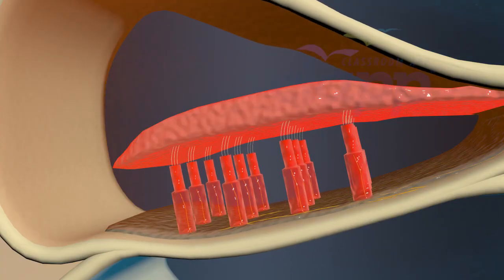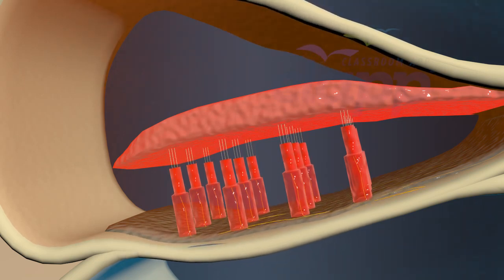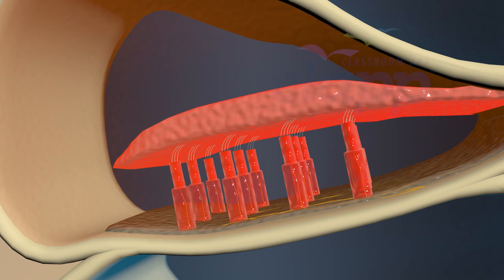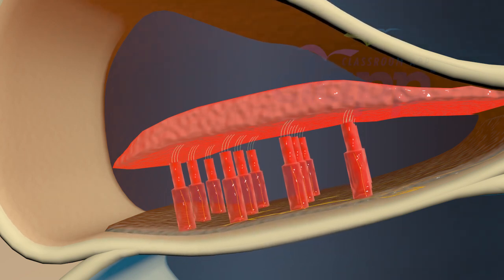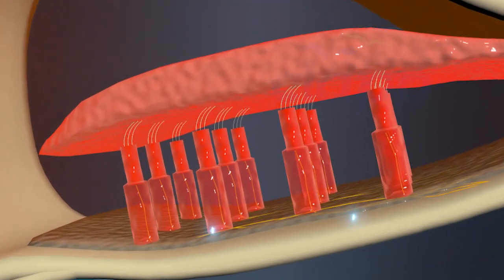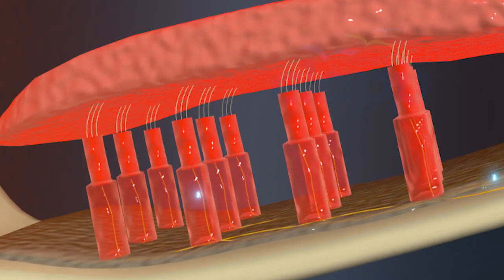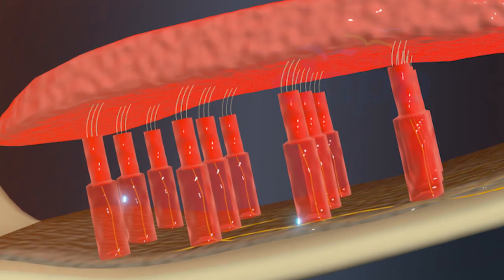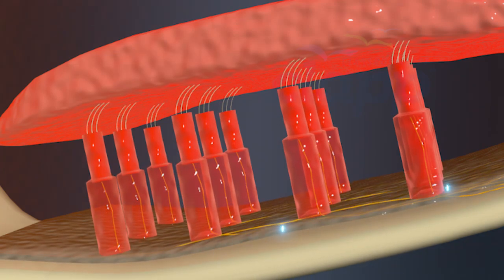The movement of the endolymph causes the basilar membrane to move and this causes the movement of hair cells in the basilar membrane. Stereocilia which are situated on top of the hair cells are bent against the tectorial membrane and this generates electrical signals corresponding to those vibrations.